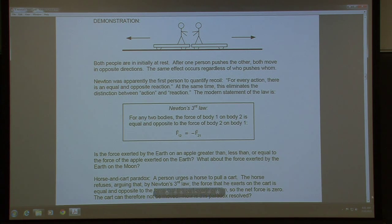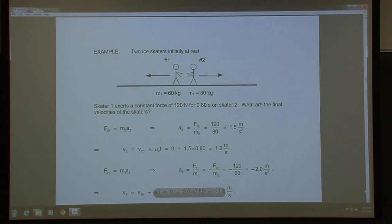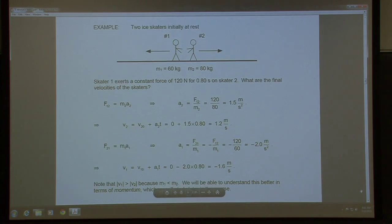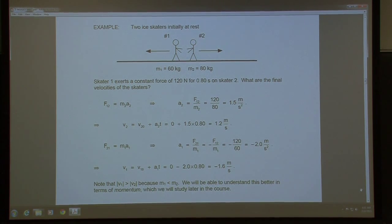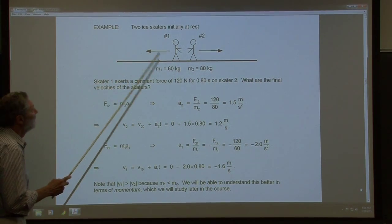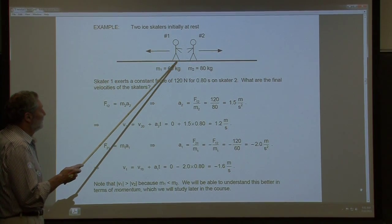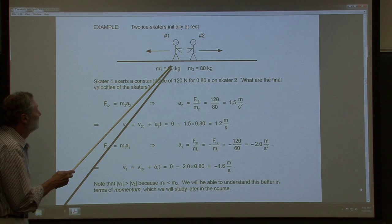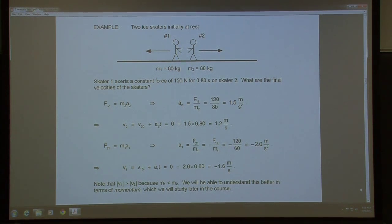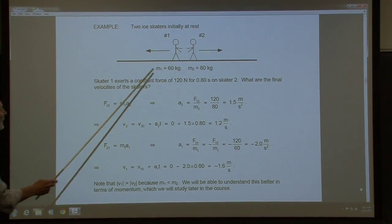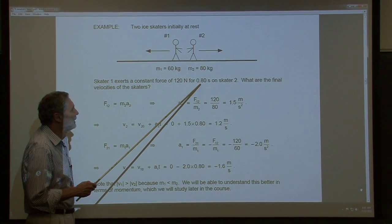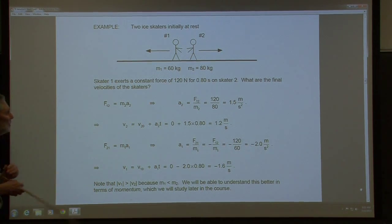Here's a simple quantitative example, very similar to that demonstration with the two people. There are two people on ice with very low, negligible friction. Person one exerts a force of 120 Newtons — a constant force for 0.8 seconds — on person two. We want to find the final velocities of the skaters.